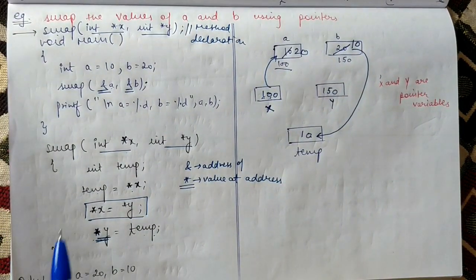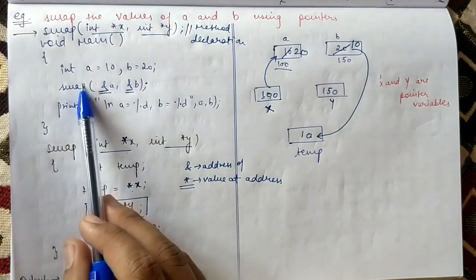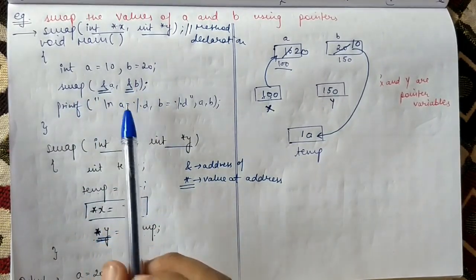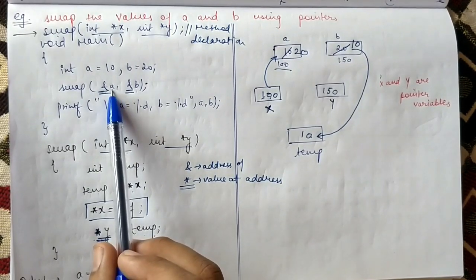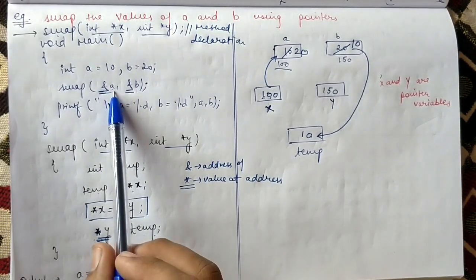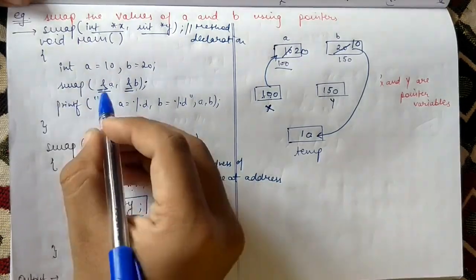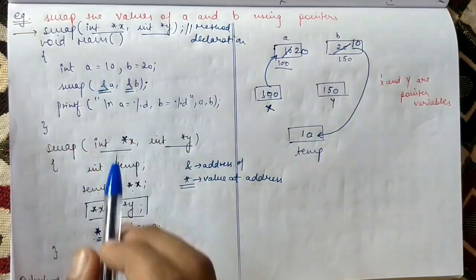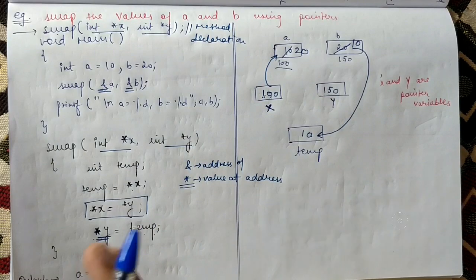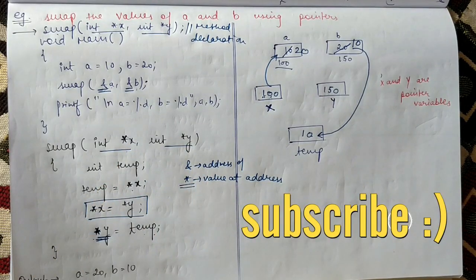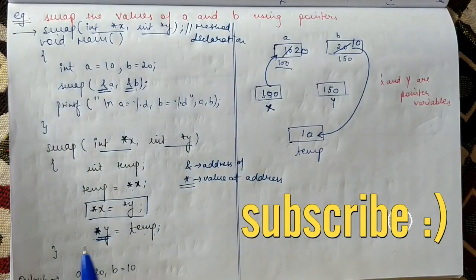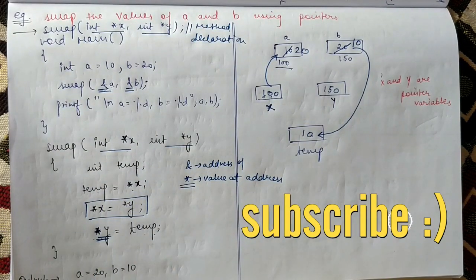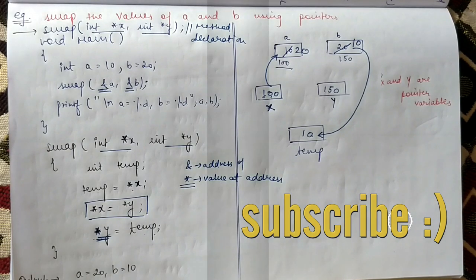The main concept is: when we pass the actual address, changes are made to the actual arguments. If we don't pass the address — using call-by-value — a copy of the variables is formed, so x gets the value of a and y gets the value of b, and the actual arguments are not changed. That was the program to exchange the value of a and b using pointers. If you liked this, click the thumbs up and subscribe to my channel. Bye bye!